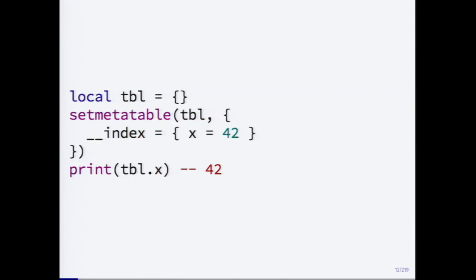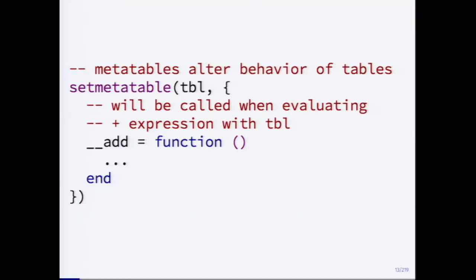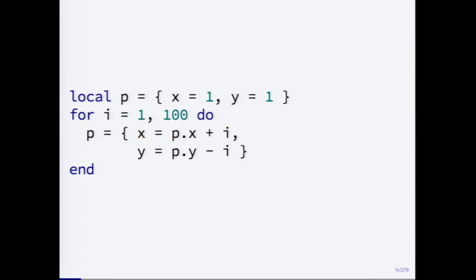It can also behave like a prototype chain in JavaScript. If you assign a table to __index instead of a function, then if a key is not found in the table, it will look it up on the __index table inside the metatable. So if I assign a table containing X to the __index metamethod, when I try to look up X and X is not in the table, it goes to that table and returns 42. Metatables also allow you to override things like __call and all kinds of operators.